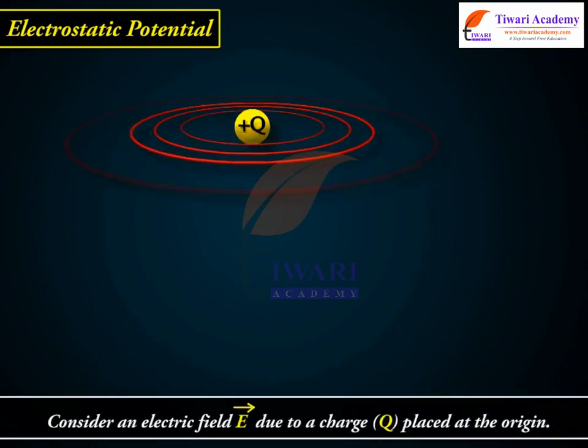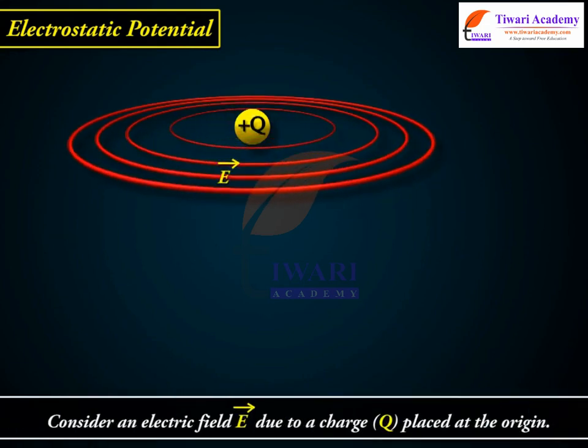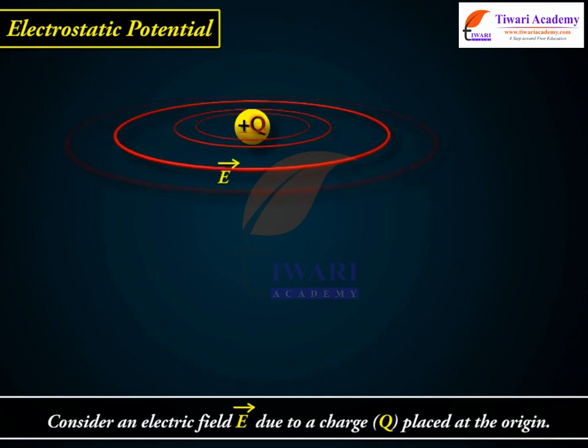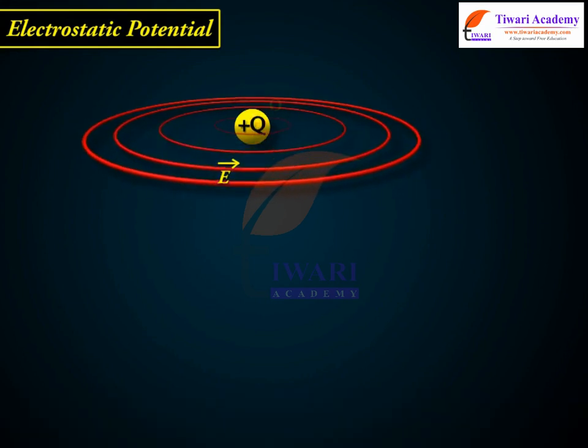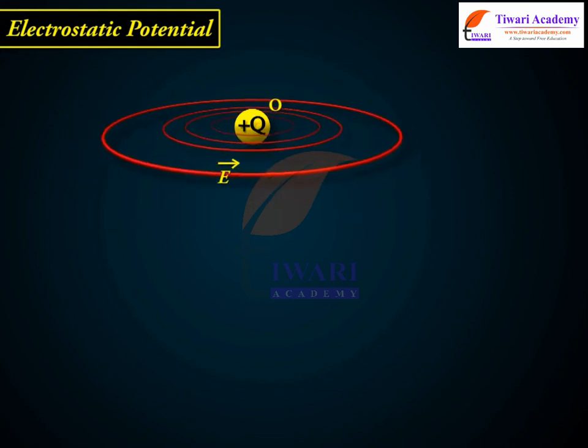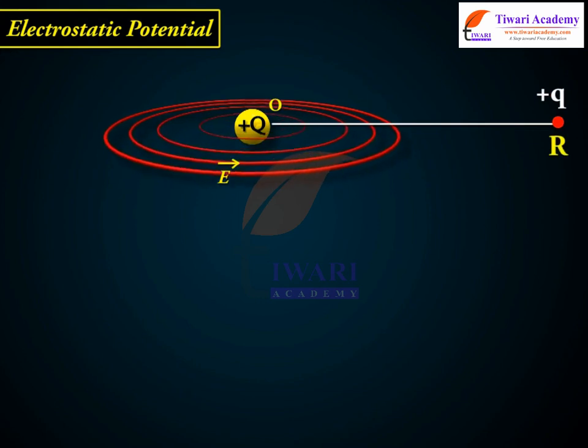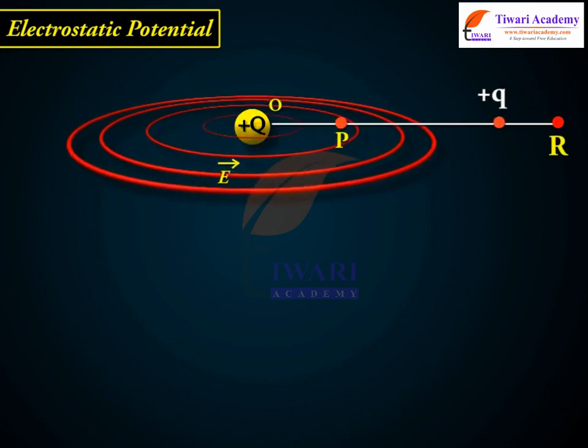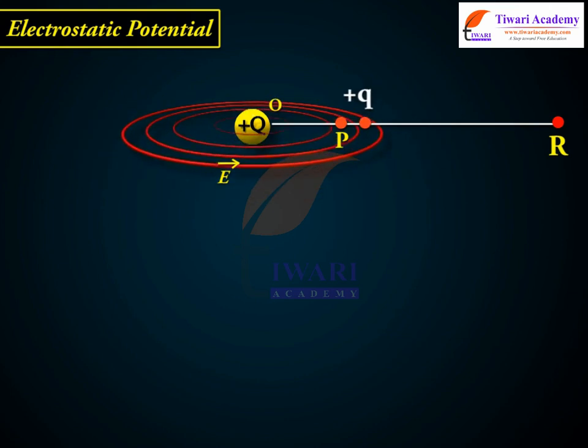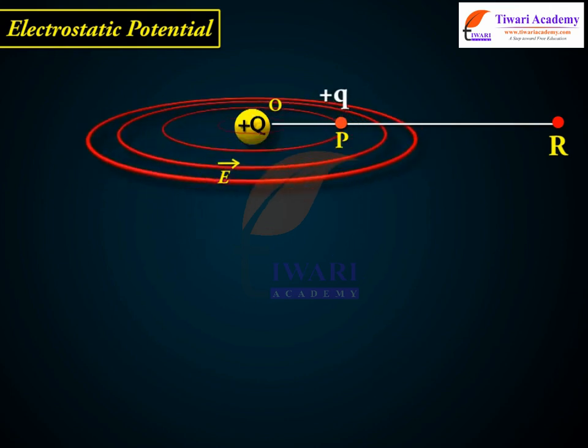Consider an electric field, E vector, due to a charge Q placed at the origin. Imagine that we bring a test charge q from a point R to a point P against the repulsive force on it due to the charge Q.